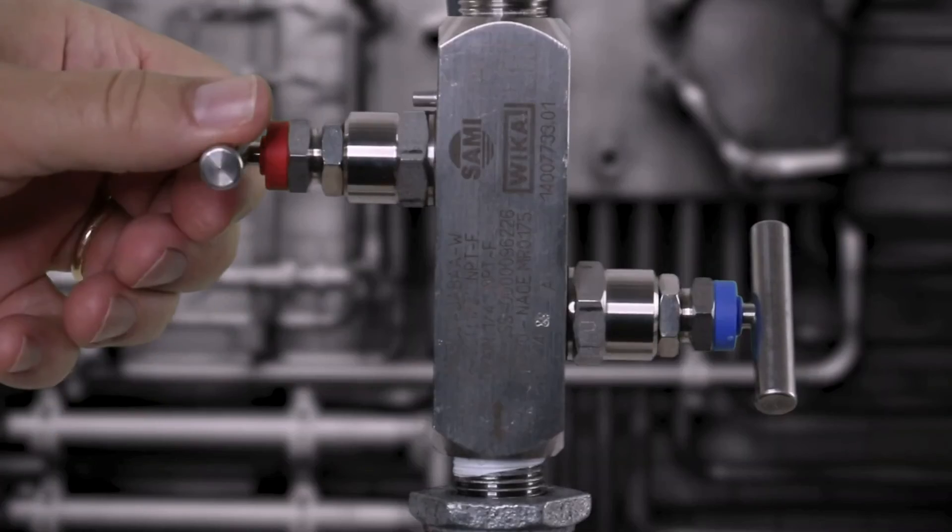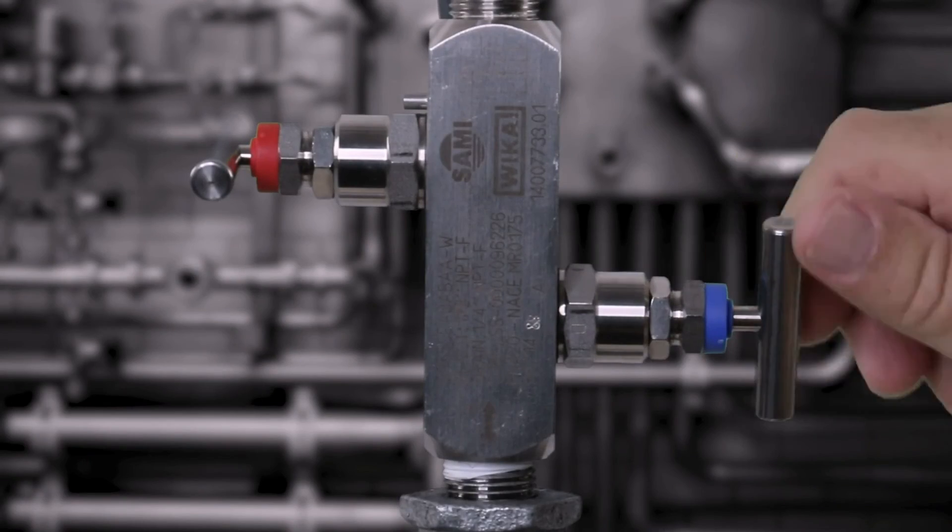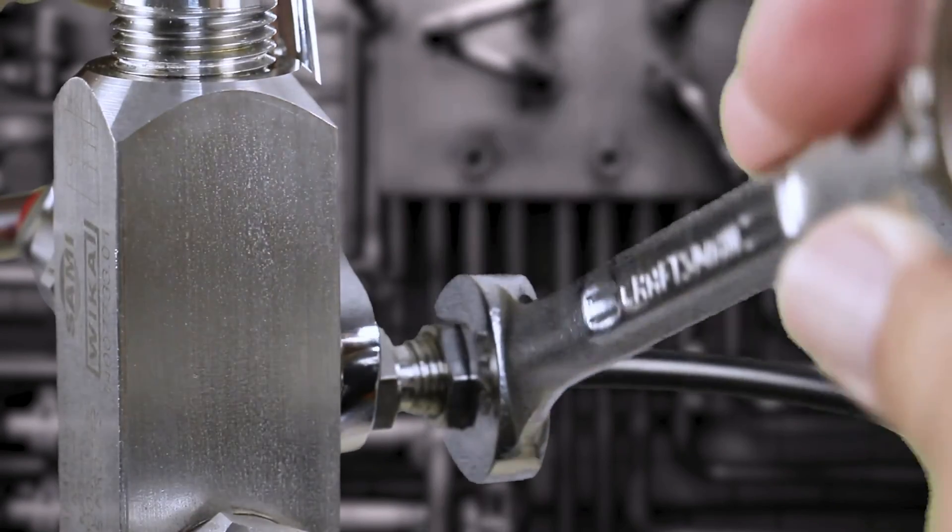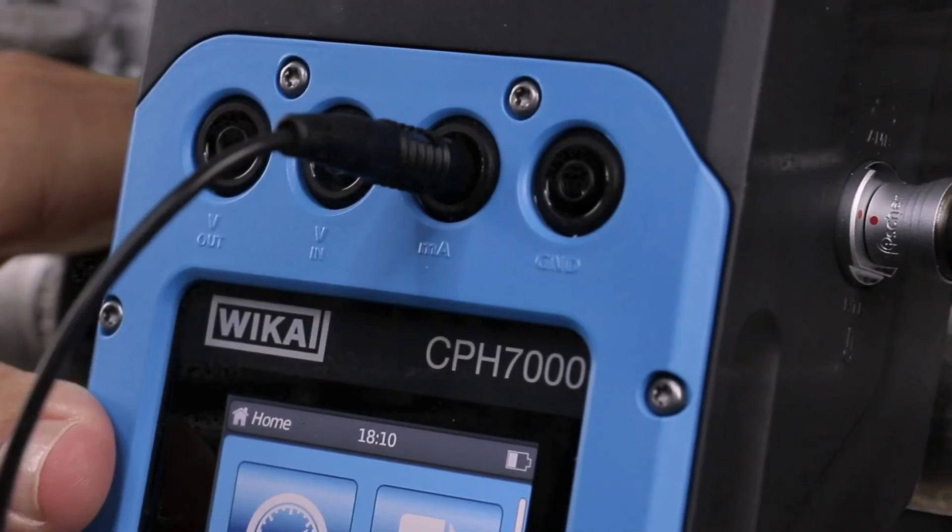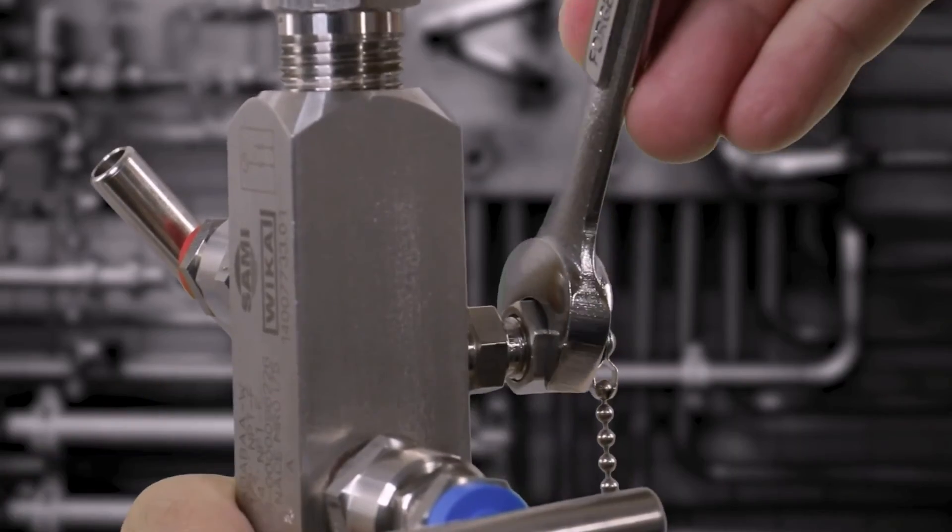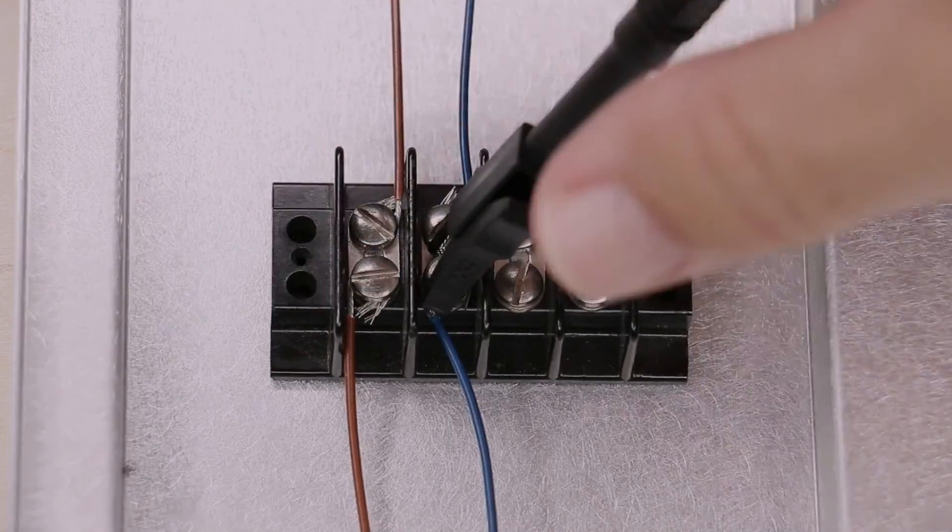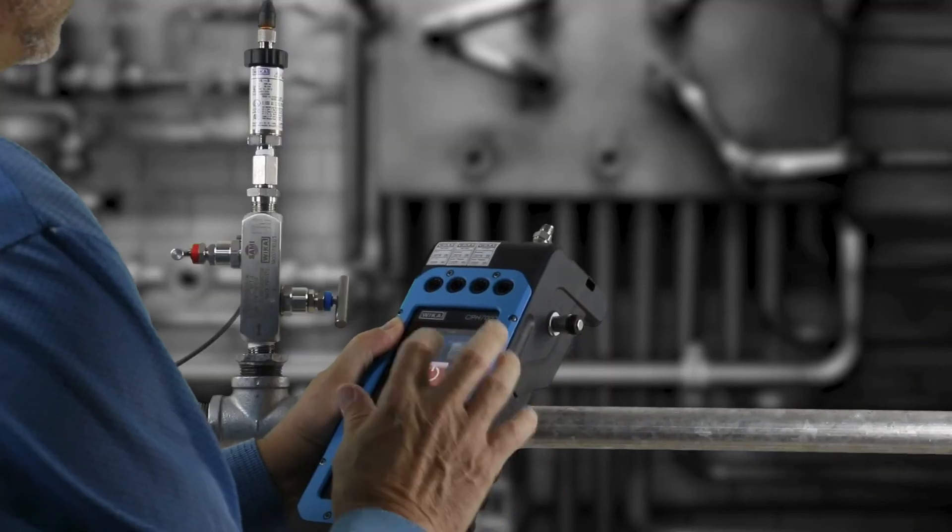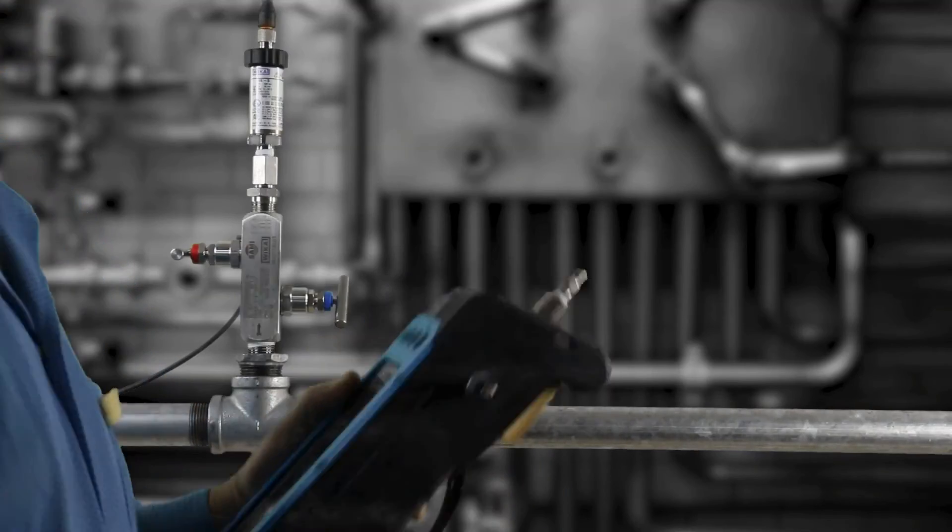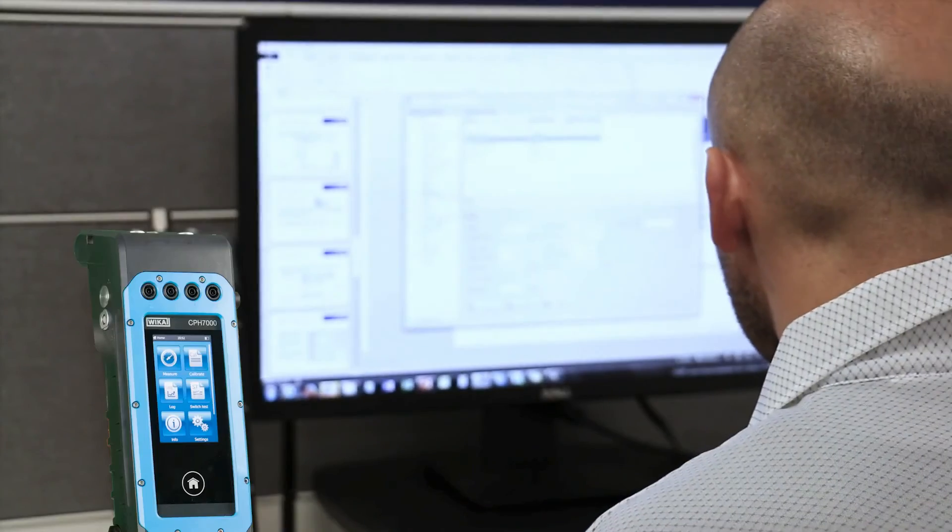When the calibration is complete, close the bleed valve and open the block valve. Disconnect the tubing and the test leads from the transmitter and the process. Replace the cap on the test port. Secure the electrical connections and repower the loop. Collect and record the calibration data using WIKA-CAL software.